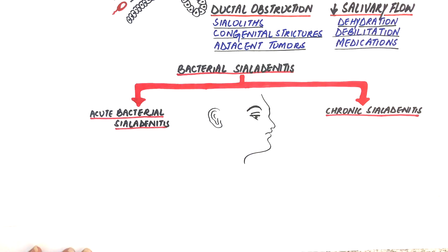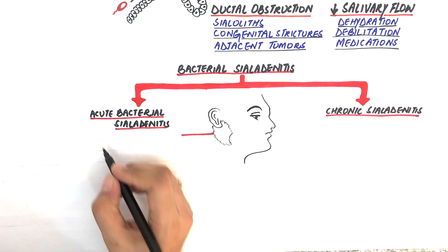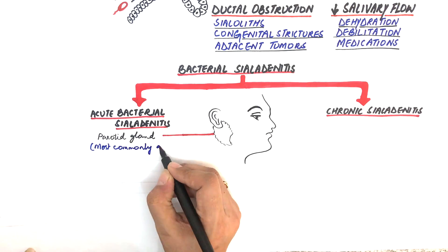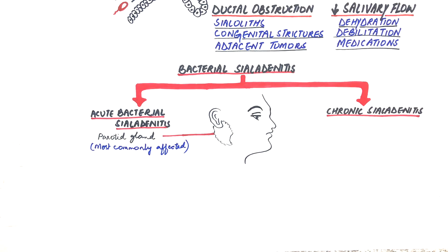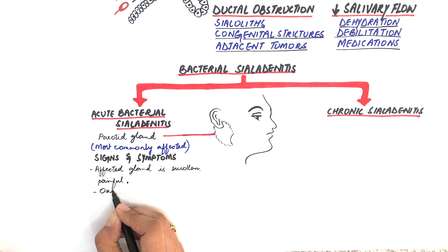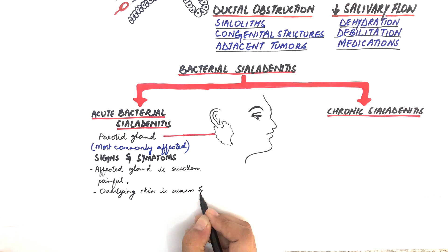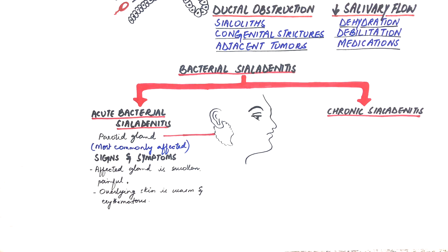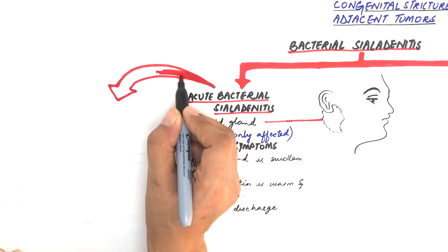In acute bacterial sialadenitis, the gland most commonly affected is the parotid gland. The affected gland is swollen and painful, and the overlying skin is warm and erythematous. The patient may also have low-grade fever and trismus. A purulent discharge is often observed from the ductal orifice when the gland is massaged.